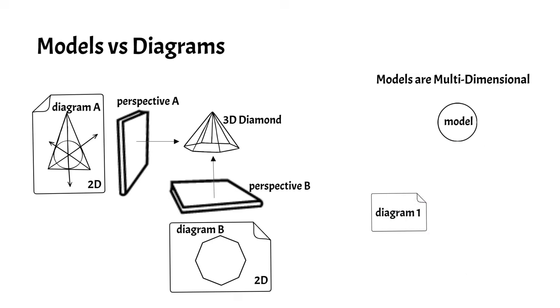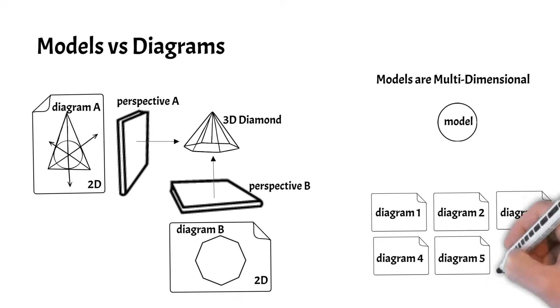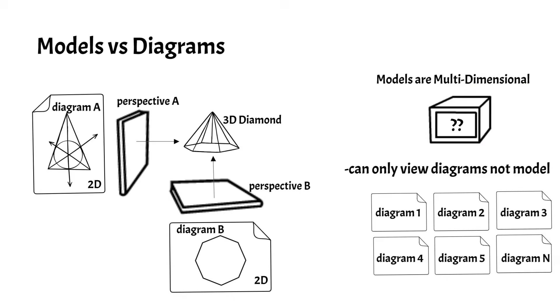Unlike the diamond, the system model is more than three dimensions. Therefore, we cannot actually see the model, we can only view the diagrams. The aggregation of the diagrams will allow the engineers to understand the highly complex multi-dimensional model.